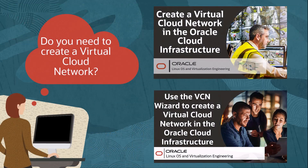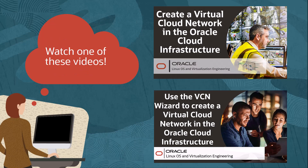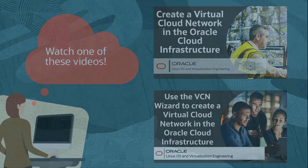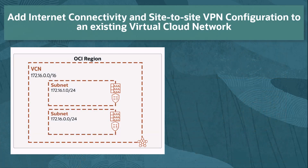The site-to-site VPN wizard does require an existing virtual cloud network, so if you haven't created a VCN yet, check out one of these videos or expand the video description for links to documentation on creating a virtual cloud network. The site-to-site VPN wizard involves setting up and configuring several network service components. The wizard creates these components for you or modifies existing network service components as part of the wizard process.